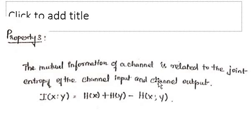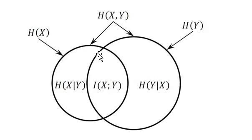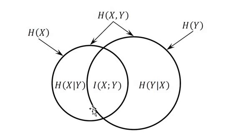The third property is that mutual information of a channel is related to the joint entropy of the channel input and channel output. That is: i(x, y) = h(x) + h(y) − h(x, y). We can illustrate this with the diagram: i(x, y) equals the full circle h(x) plus the full circle h(y) minus h(x, y), which is both semicircles combined. What remains is i(x, y) — the mutual information.